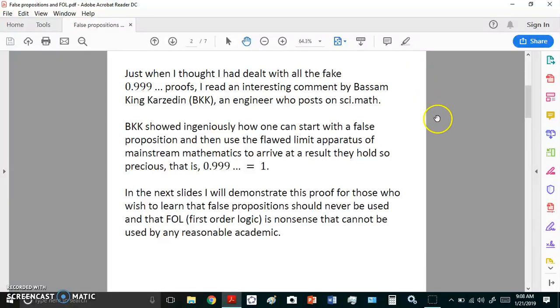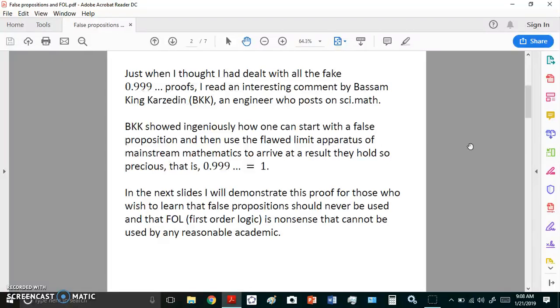So in the next slides, I will demonstrate this proof for those who wish to learn that false propositions should never be used and that first-order logic is nonsense that cannot be relied upon by any reasonable academic. So, what is this false proposition? It's the proposition that 1 equals 0. You can do this sort of thing in first-order logic. There's no problem, provided that whatever you do after this shows that you arrive at a contradiction.